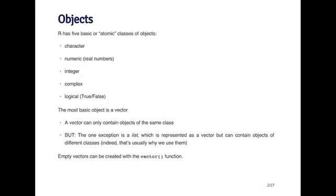Of course, with any great rule, there's always an exception. And this one is no exception. So with vectors, there's one type of vector that can have multiple different types of classes, and that's called a list. So a list is represented as a vector, it's a sequence of objects. But each element of that vector can be an object of a different class.